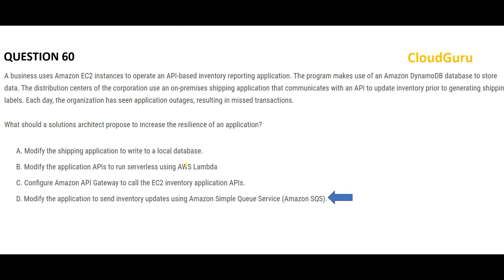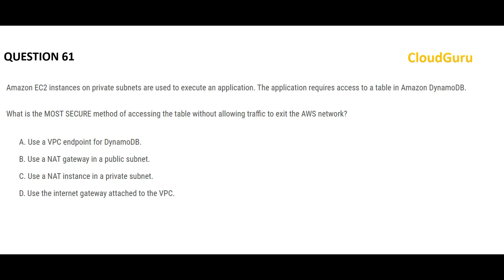Let's look at the other options. Option A says write to a local database — but then you already have DynamoDB and now you create a local database too, which is not cost-effective and will still have missed transactions because the sync between the local database and DynamoDB is inconsistent. Option B using Lambda will not help — Lambda is a cost-reduction serverless compute solution but it doesn't address storing data safely during outages. Option C configures API Gateway to call the inventory application API, but if any component in that chain goes down, data is lost. You always need SQS or a middleware messaging application.